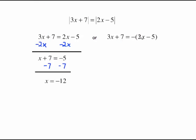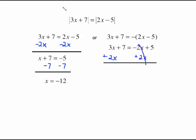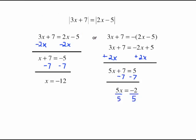For the negative case, distribute the negative through the parentheses, making it negative 2x plus 5. Add 2x to both sides to get 5x plus 7 equals 5. Subtract 7 from both sides; that cancels, leaving 5x equals negative 2. Divide by 5, and we have x equals negative 2 fifths. So those are our two answers; we need to check both.